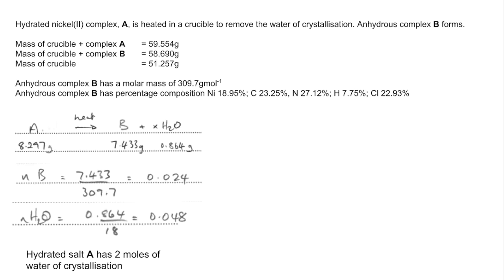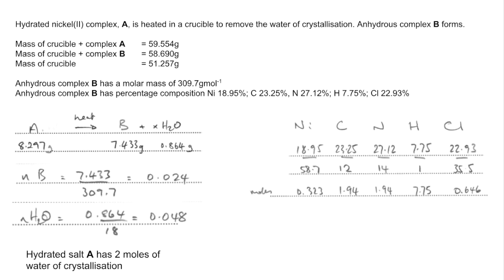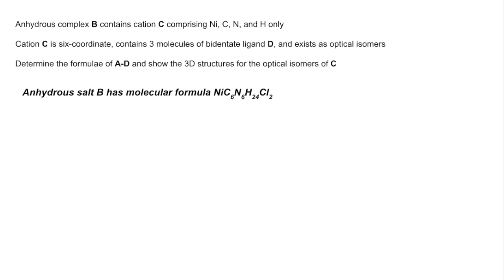We're going to feed that into the formula for A when we're ready, and we're going to move on to all that percentage composition data and do an empirical formula calculation. There's my atoms, there's the mass over MR or percentage over MR which gives us these moles here. Divide by the smallest we get 1 to 6 to 6 to 24 to 2, and then add that up and work out the MR of the empirical formula and sure enough it comes out at 309.7. From that we can see that the molecular formula of B is that.